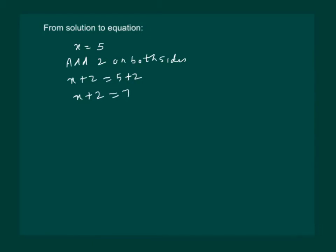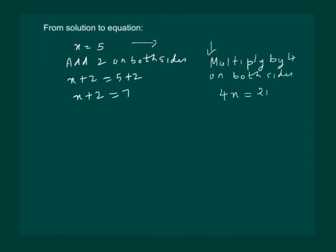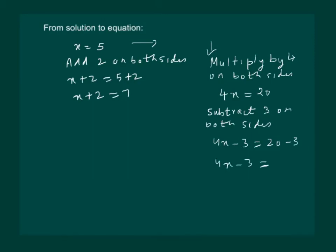But we can also form another equation by saying: multiply by 4 on both sides, which gives 4x equal to 20, and then subtract 3 on both sides. This gives us 4x minus 3 equal to 20 minus 3, that is 4x minus 3 equal to 17. That means if we have one solution, we can form a number of equations.